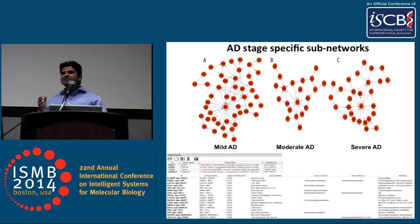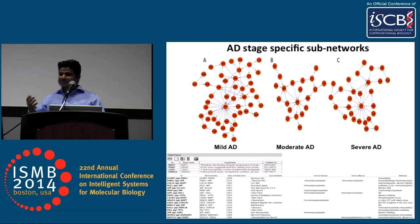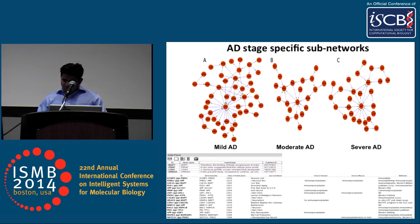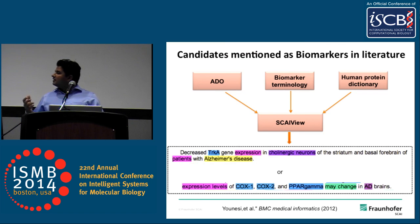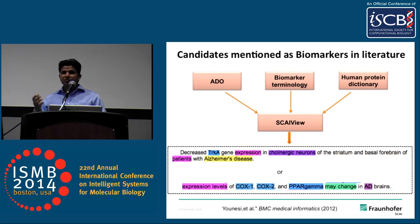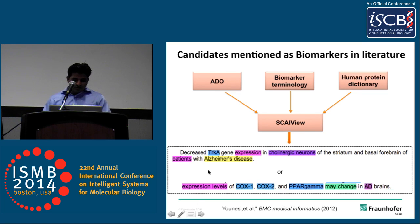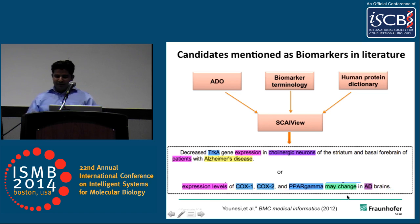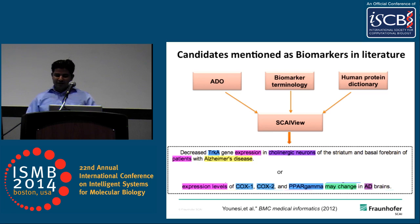Once we had the stage-specific Alzheimer's disease networks, we wanted to know — particularly in the early stage where people don't know much — how many of these candidates are actually considered biomarkers. We mined literature with a biomarker terminology, looking for sentences where a candidate has been mentioned or speculated as a biomarker for Alzheimer's disease — for example, decreased TRK gene expression in cholinergic neurons, or expression level of COX-1 may change in AD brain. In this way, we derived candidates considered as biomarkers.